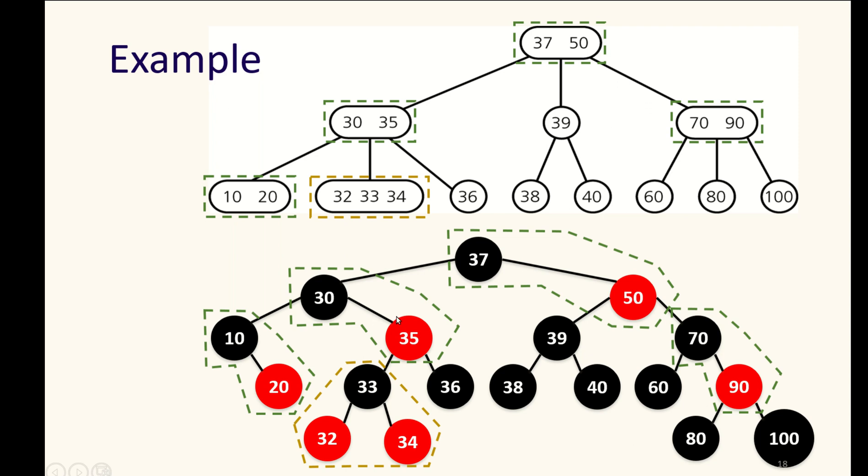And to step from any leaf from 35 requires stepping through only one black node. So the 33 is the black node we would step through here, and the 36 is the black node that we would step to here, but it still counts. It's the one black node step.